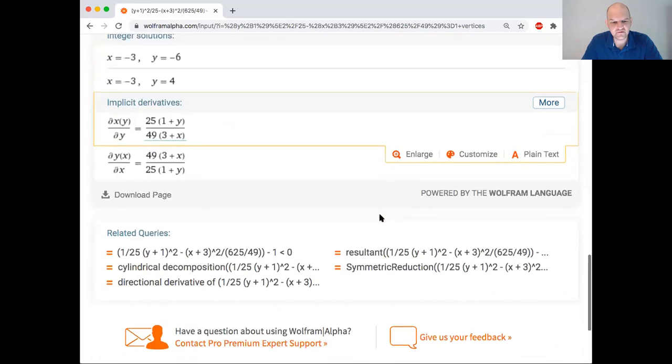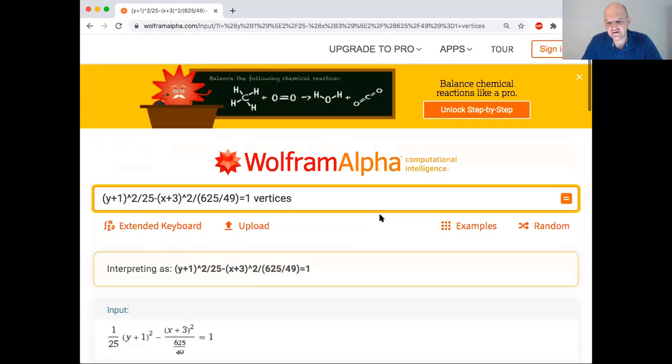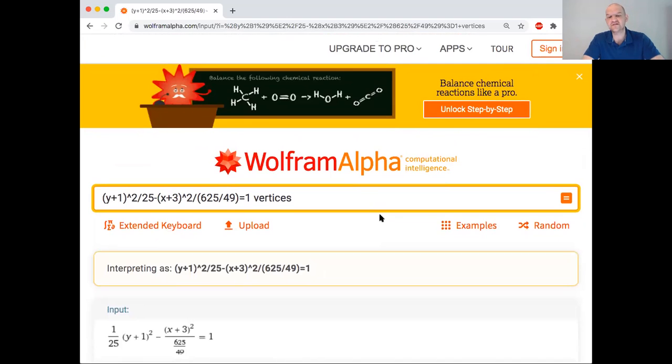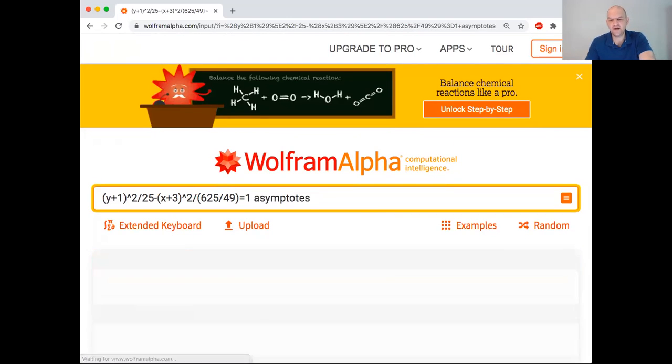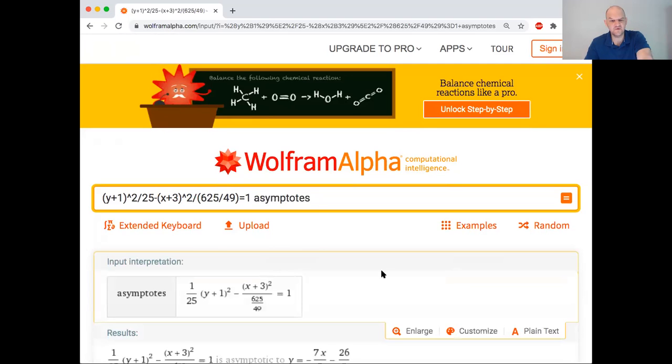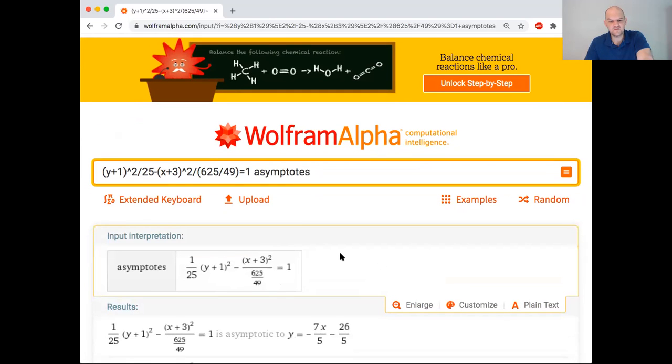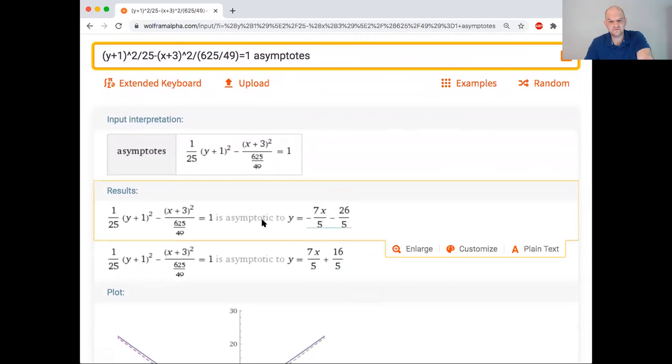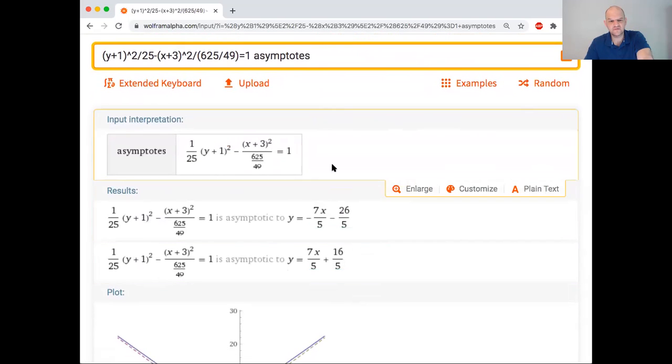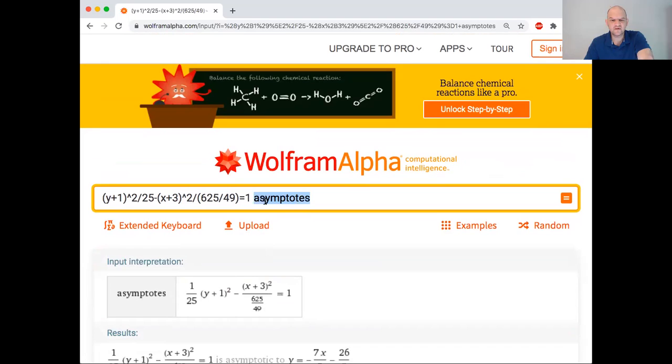Let me see if I can get it to tell me things. Vertices. Who knows? I mean, it's a computational knowledge engine. Hyperbola. I guess not. What the heck? It used to, I think. I think it used to tell you the vertices, covertices, the asymptotes, but apparently not the case anymore. Asymptotes. Oh, look at this. Asymptotes.